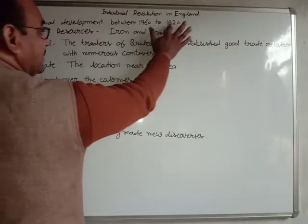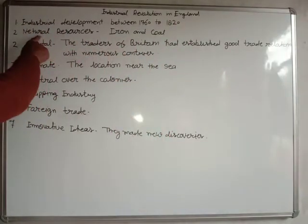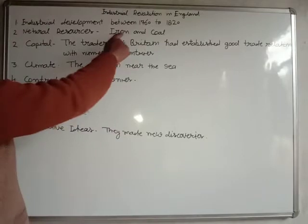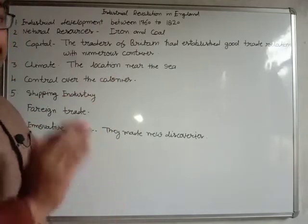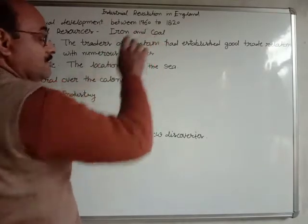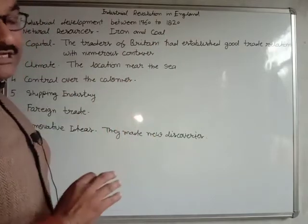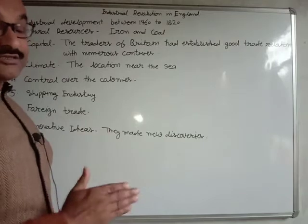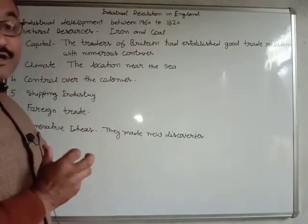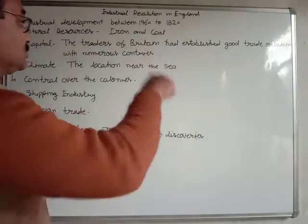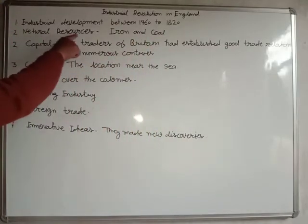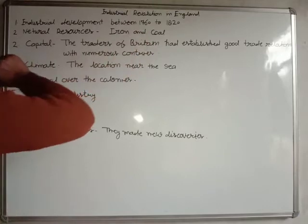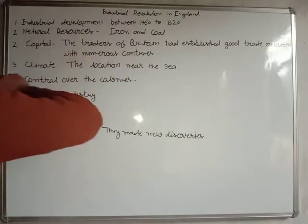The first factor of industrialization was natural resources. Iron and coal are both the basic resources of any industry. In Britain, the availability of iron and coal was sufficient — the stock was enough. The engineers and innovators had gained the knowledge and ideas of how to use iron and coal in industry. So natural resources, mainly iron and coal, were the first cause of industrial development in England.